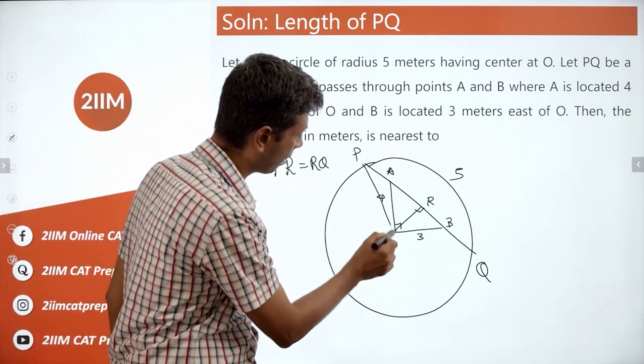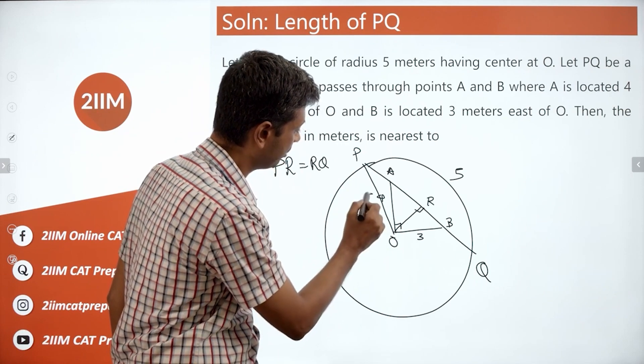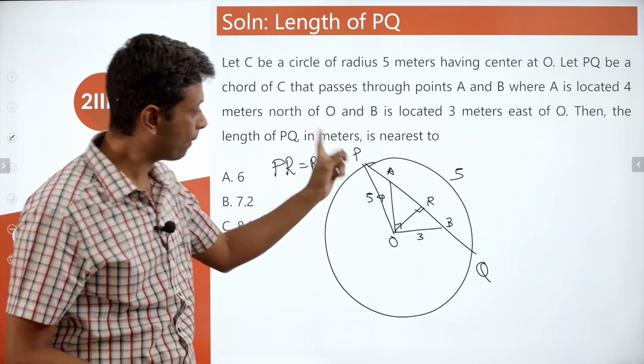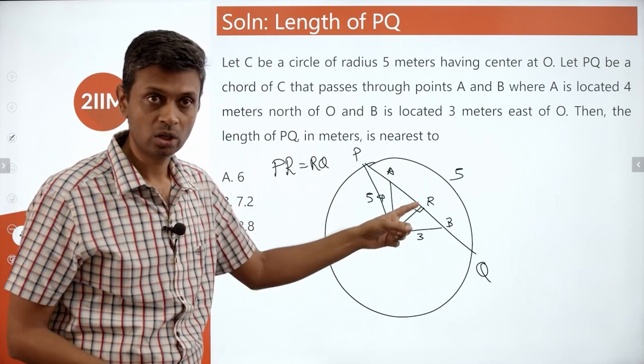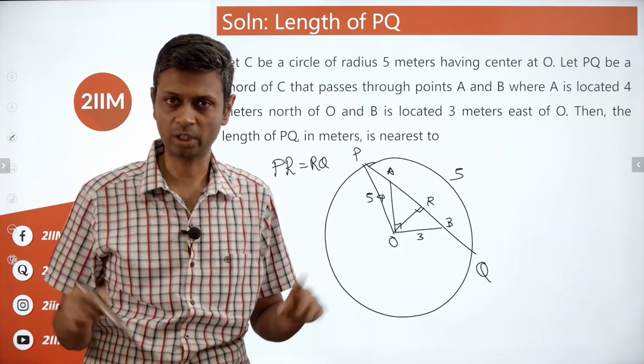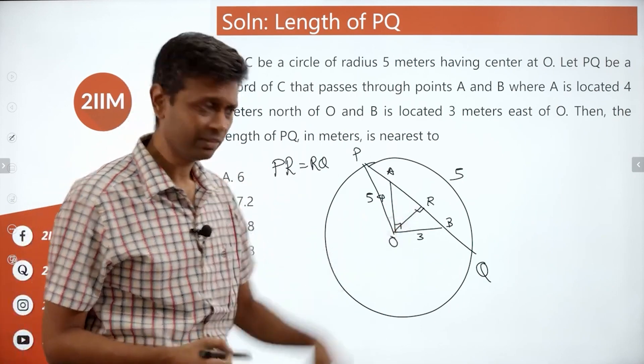If you join O, P, that is 5 meters. OP is 5. If we know PR, we can find OR. Or if we find OR, we can find PR. Pythagorean theorem, nothing more than that. How do you find OR? Very simple.